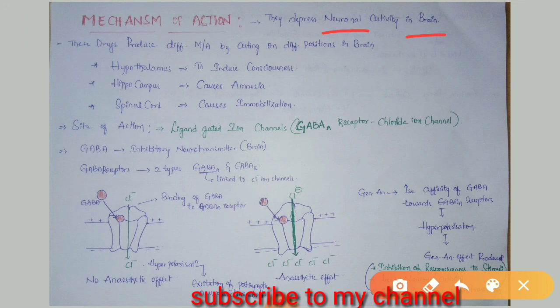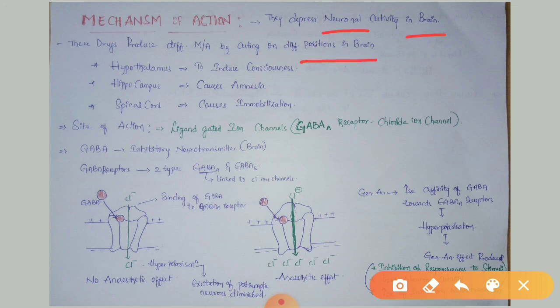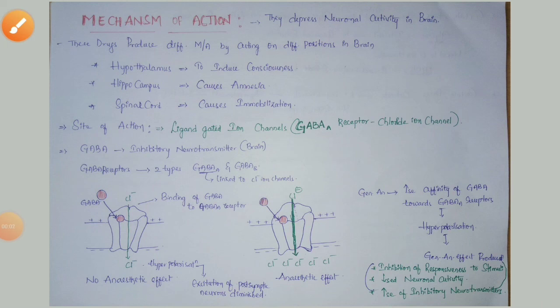General anesthetics can act upon the hypothalamus, hippocampus, and spinal cord. By acting on the hypothalamus, they induce unconsciousness. By acting on the hippocampus, they produce amnesia. By acting on the spinal cord, they produce immobilization. The main site of action for general anesthetics are ligand-gated ion channels.